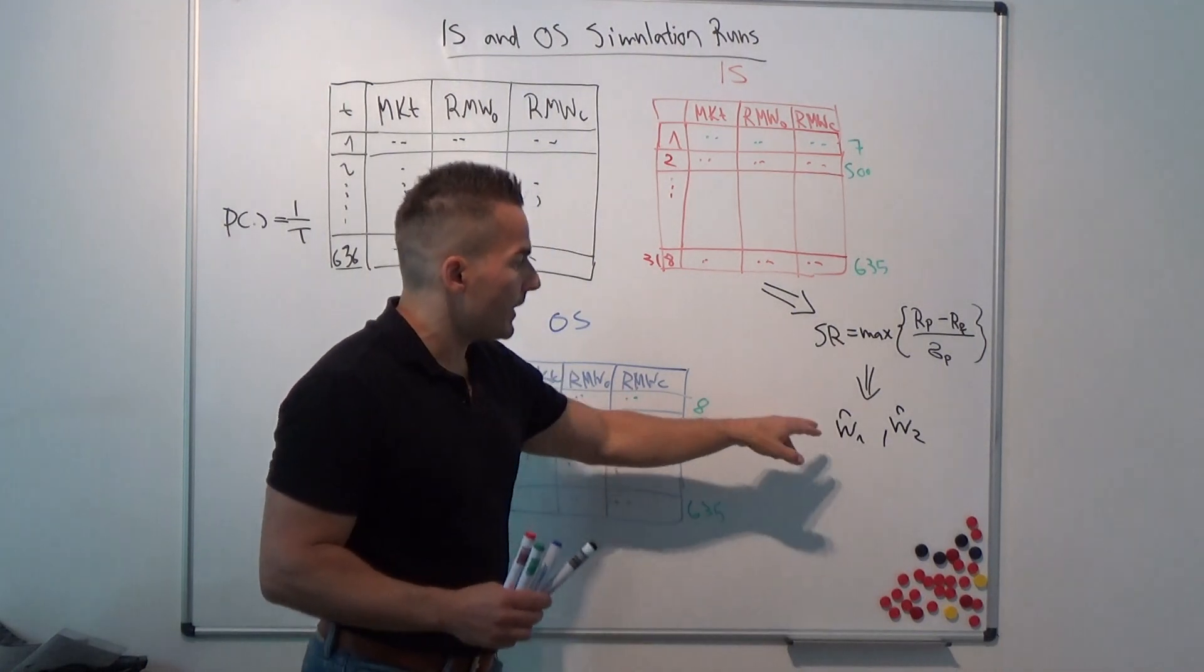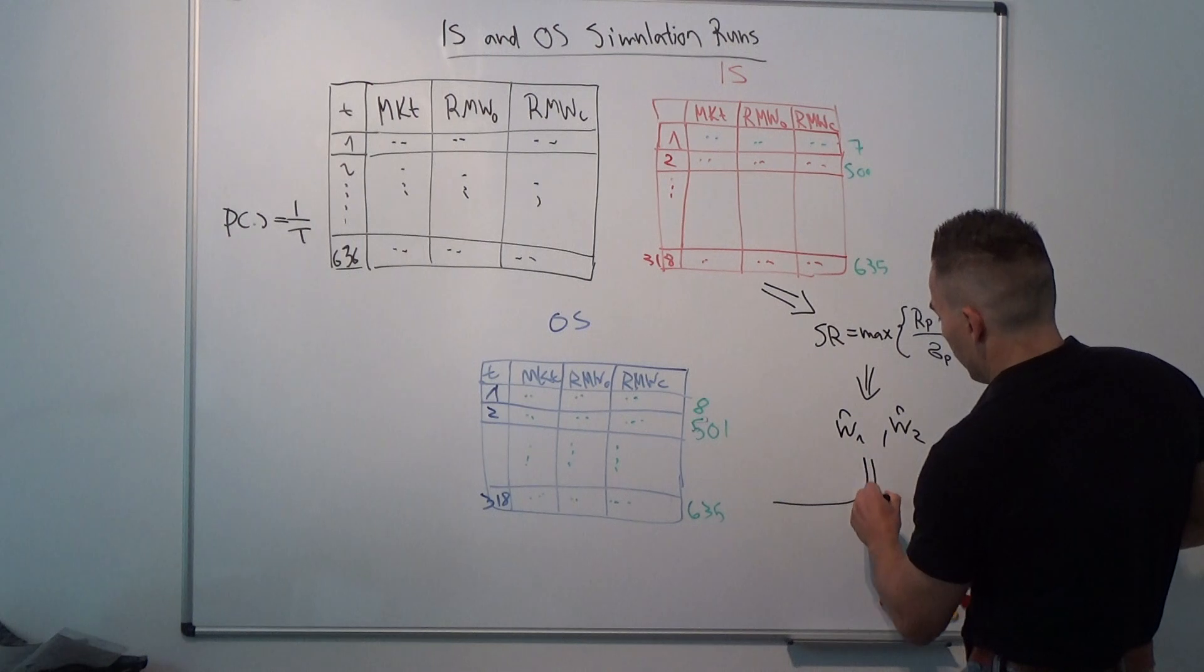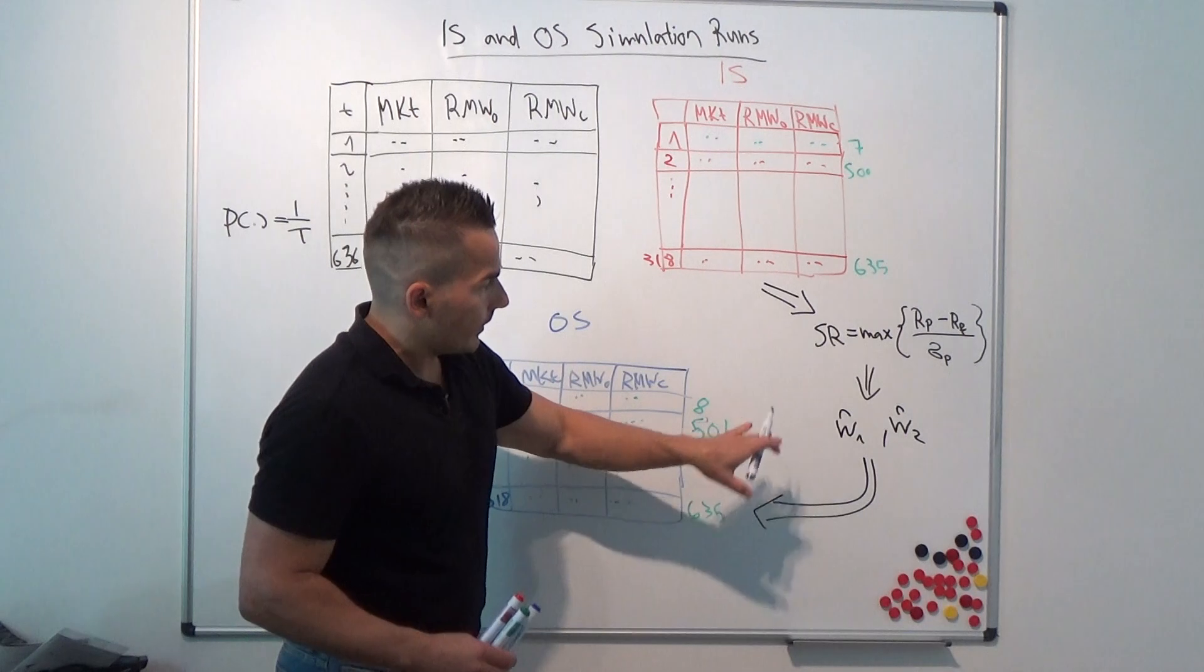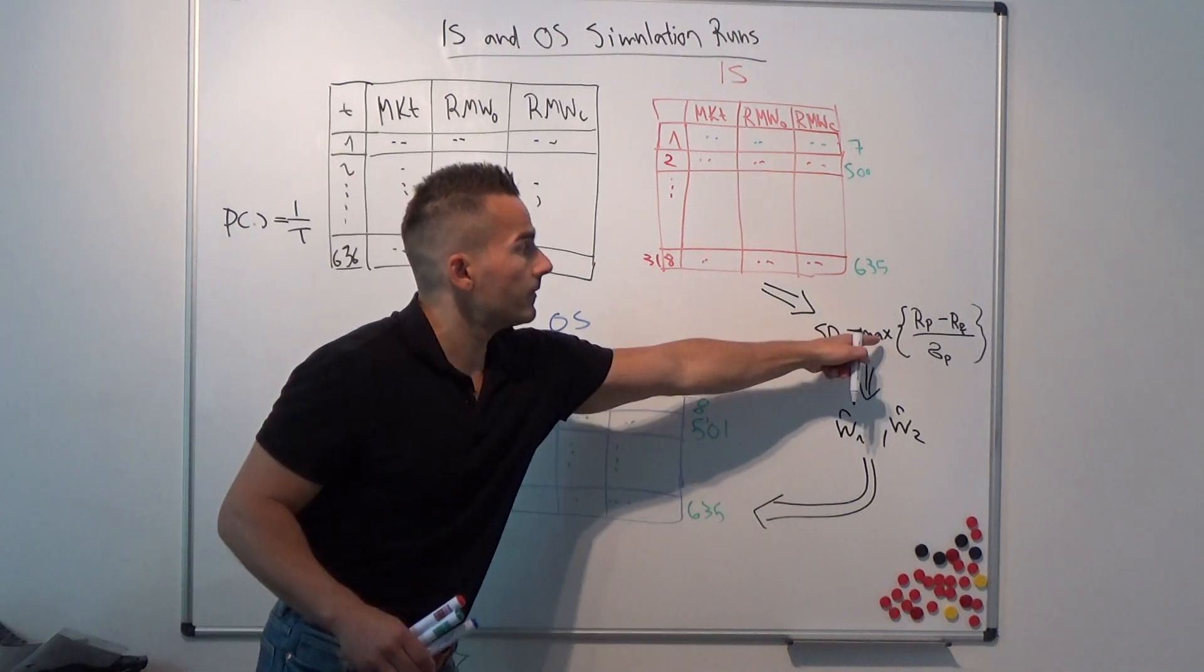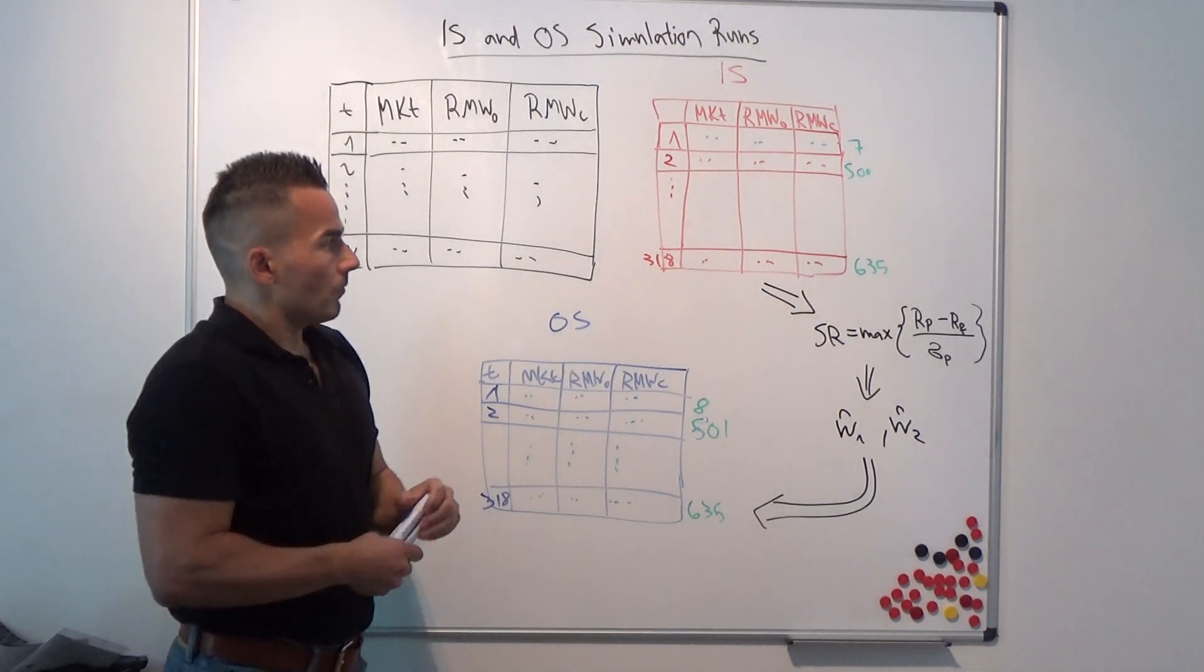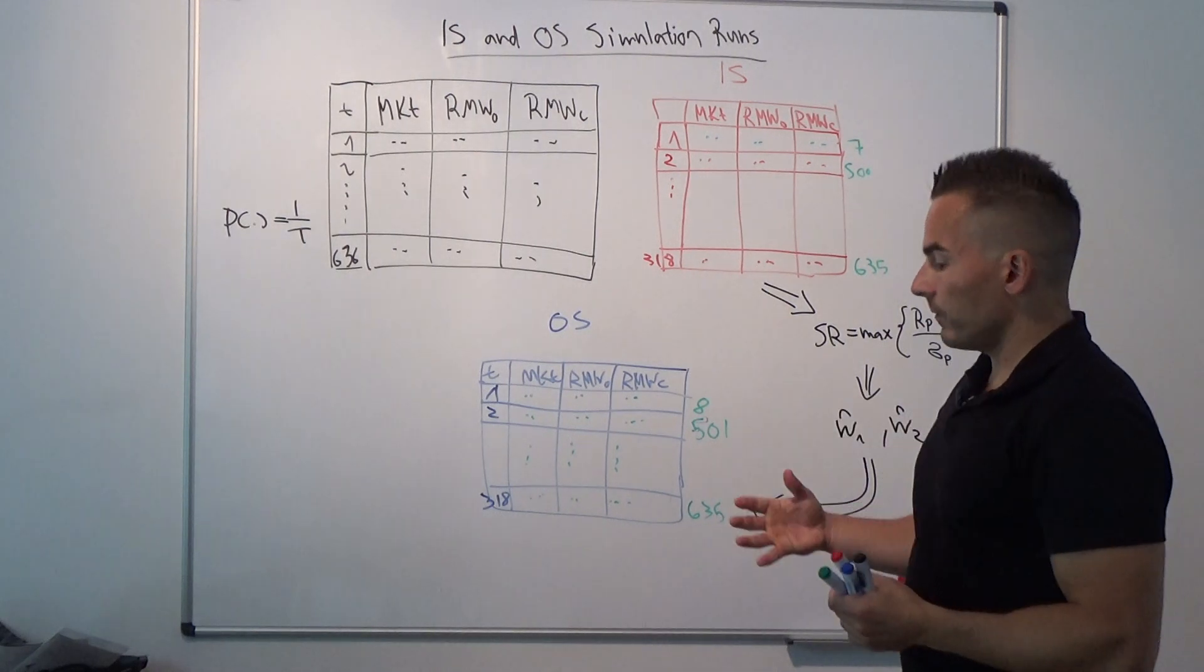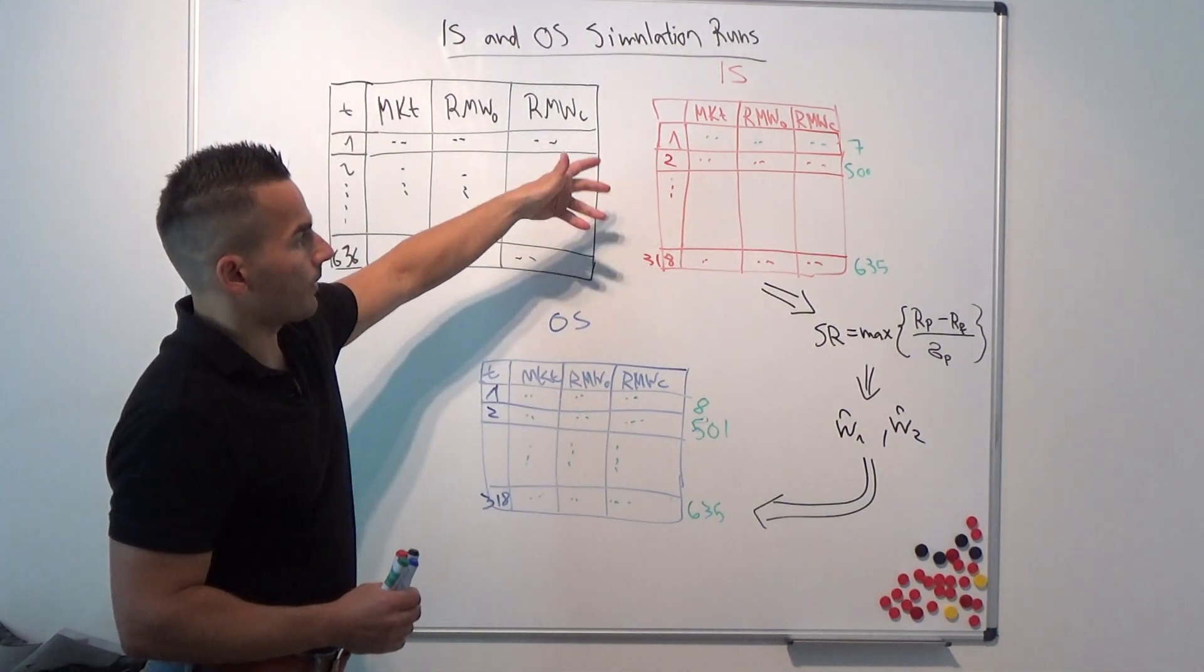We keep these weights constant and run the maximum squared Sharpe ratio for the out-of-sample data matrix using these weights that we have estimated using the in-sample data. We do that because, as we already said, using the full-sample simulation is biased. This bias is broken by using this procedure.